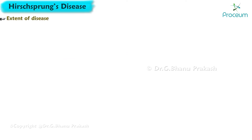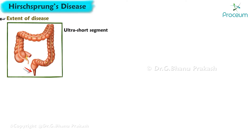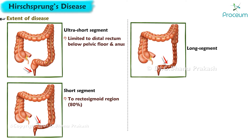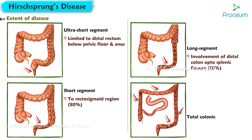Regarding extent of disease: Ultra Short Segment is limited to the distal rectum below the pelvic floor and the anus. Short Segment is limited to the rectosigmoid region, approximately seen in 80% of cases. Long Segment involves the distal colon up to the splenic flexure, approximately seen in 10% of cases. Total Colonic involvement of the entire colon is seen in 3–8% of cases.